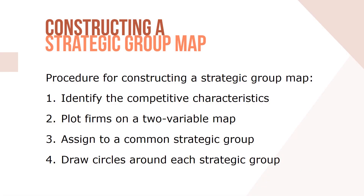The procedure for constructing a strategic group map is straightforward. First, identify the competitive characteristics that delineate strategic approaches used in the industry. Then plot firms on a two-variable map based on their strategic approaches. Third, assign firms occupying the same map location a common strategic group.